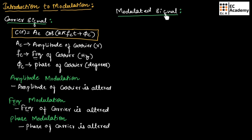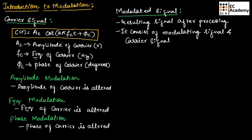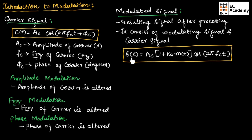Now let us see what is the modulated signal. The modulated signal is the resulting signal after processing by a modulator; it consists of the modulating signal and the carrier signal. Mathematically, we can represent the modulated signal as s(t) = Ac·[1 + ka·m(t)]·cos(2π·fc·t), where ka is the amplitude sensitivity factor.